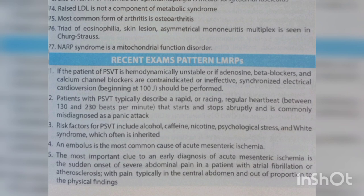An embolus is the most common cause of acute mesenteric ischemia. The most important clue to diagnosis of acute mesenteric ischemia is the sudden onset of severe abdominal pain in a patient with atrial fibrillation or atherosclerosis, with pain typically in the central abdomen and out of proportion to the physical findings.